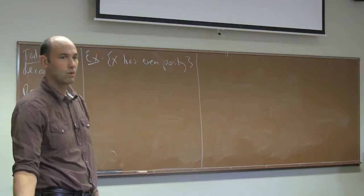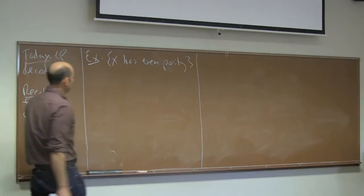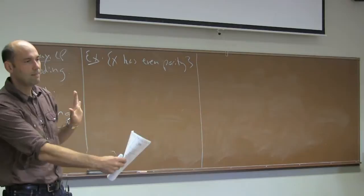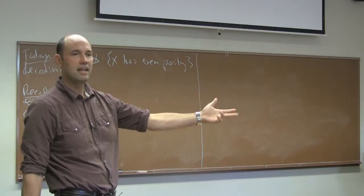One way to think about this code: take all 0,1 vectors of length n-1, and then append a parity bit — whatever the parity is at the first n-1 positions, stick that at the end to make it even overall. That's one way of thinking about this code.